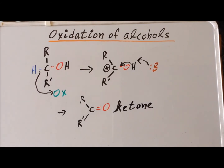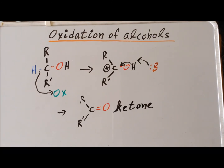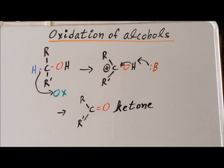Primary alcohols oxidize to aldehydes if we are sure to use PCC as our oxidizing agent; otherwise the reaction continues to a carboxylic acid. There is no such problem in the oxidation of secondary alcohols. We can use our traditional manganese or chromium oxidizing agents, and we know that we're going to get a ketone in any case.